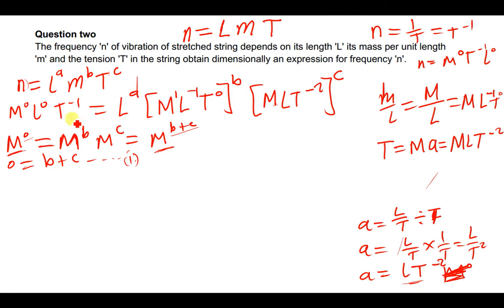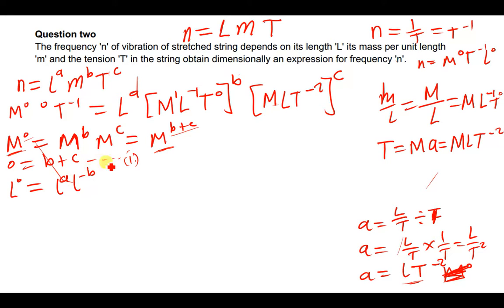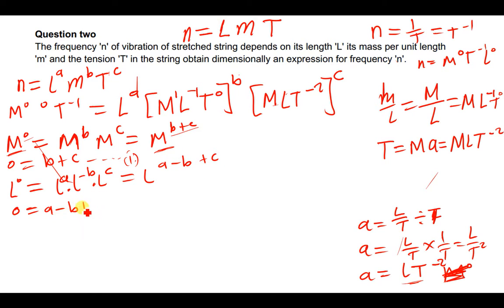For L: on the left the power is 0; on the right we have L^a from length, L^(−b) from mass-per-unit-length, and L^c from tension, giving a − b + c. Setting powers equal: 0 = a − b + c. This is equation 2.